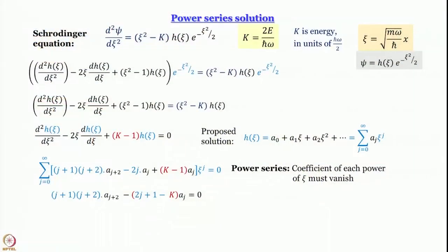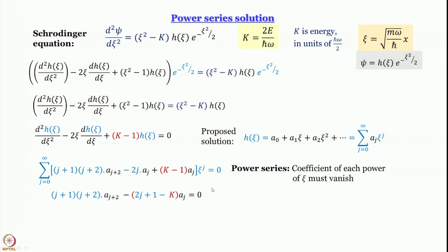This means that for each value of j, we can write: (j+1)(j+2)·aⱼ₊₂ − (2j+1−k)·aⱼ = 0. We have obtained a relationship between the jth coefficient and the (j+2)th coefficient in the power series for h. The coefficients at even or odd positions can be expressed in terms of each other.